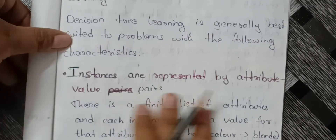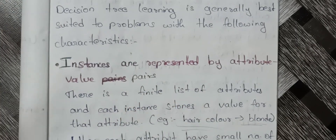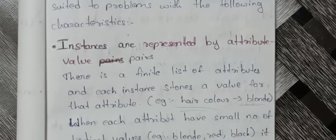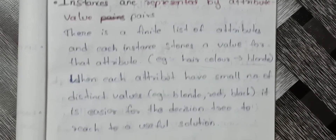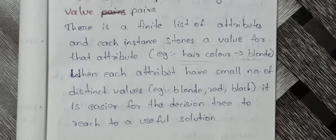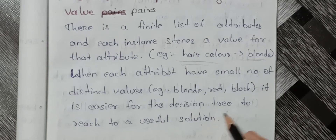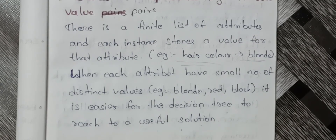So instances that are represented by attribute-value pairs — when attributes have fewer distinct values, it is easier for the decision tree to reach a useful solution. Attributes and instances should be finite and limited.